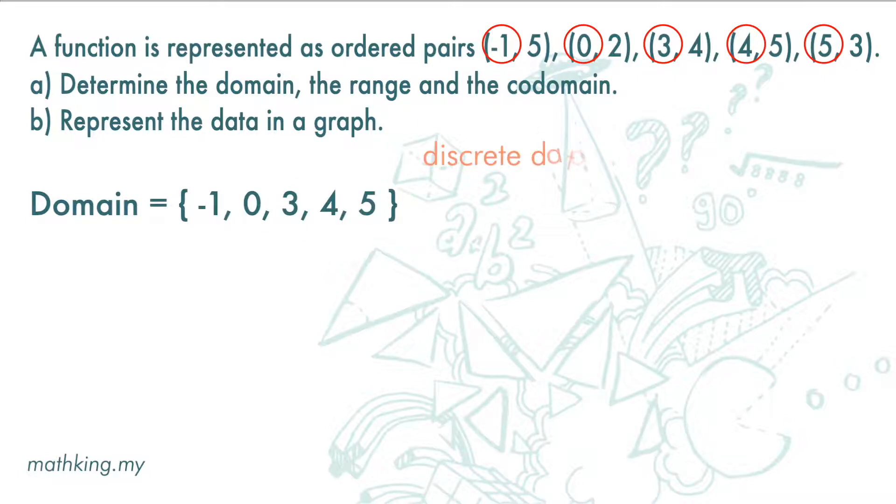Because this is discrete data, we do not express the domain in this way, where x is greater or equal to negative 1 but less than or equal to 5.